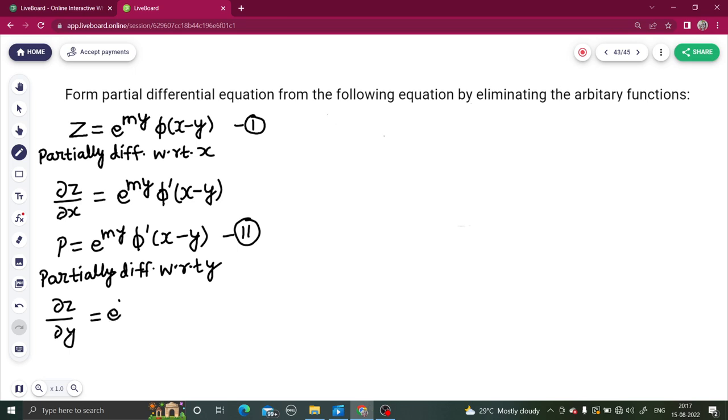Product rule: e power my as it is derivative of phi of x minus y, so phi dash x minus y derivative of x minus y is minus 1 plus phi of x minus y as it is derivative of e power my is e power my multiplied by m.